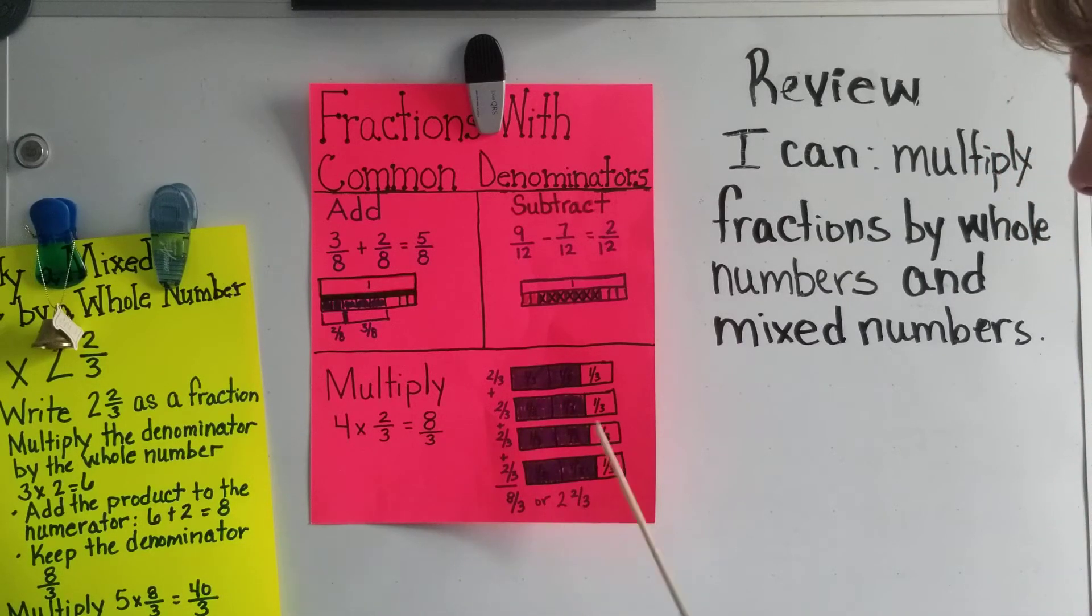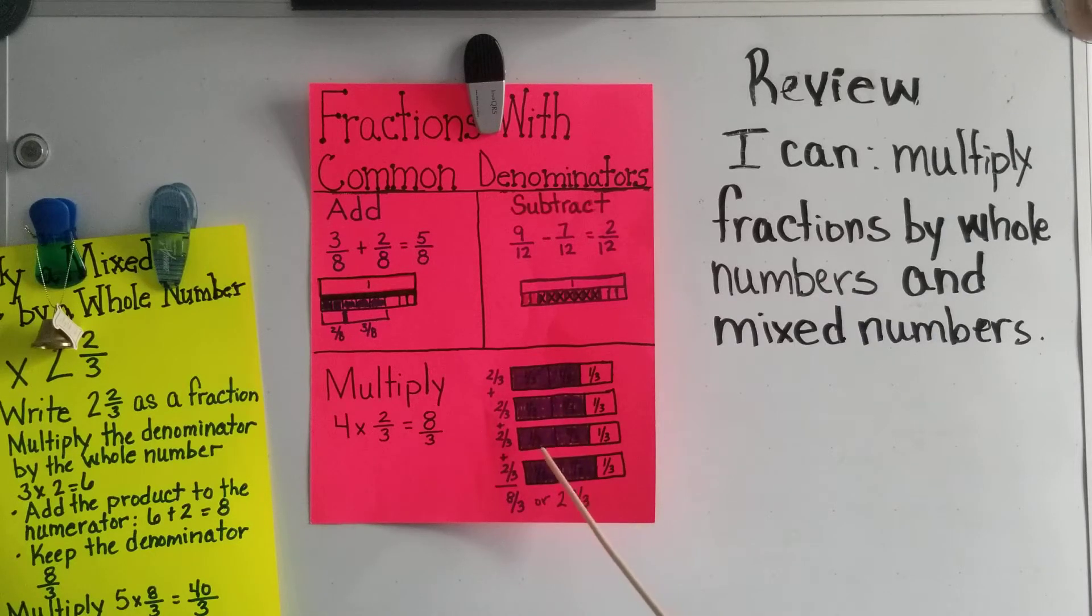I have a model here for you. So if you look at the model, we have four two-thirds parts, and we can do it this way and we can add them together. So one-third, two-thirds, three-thirds, four-thirds, five-thirds.